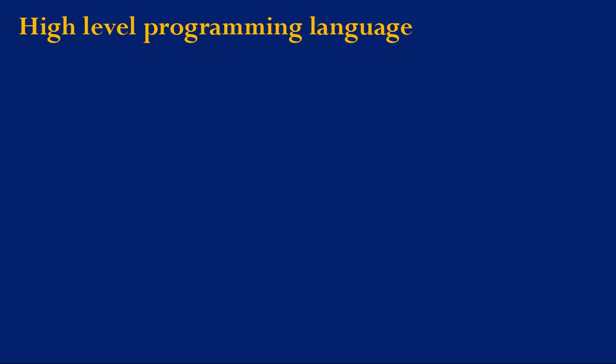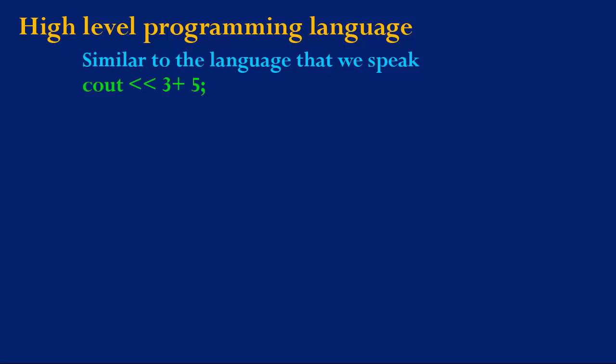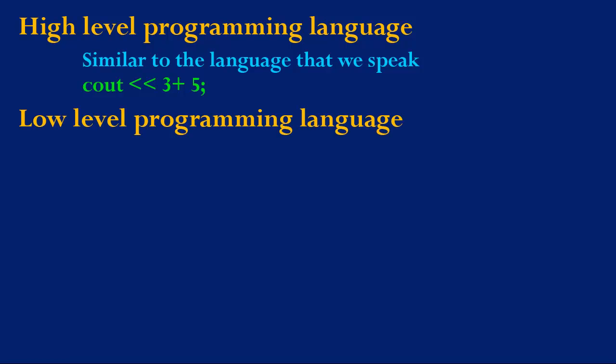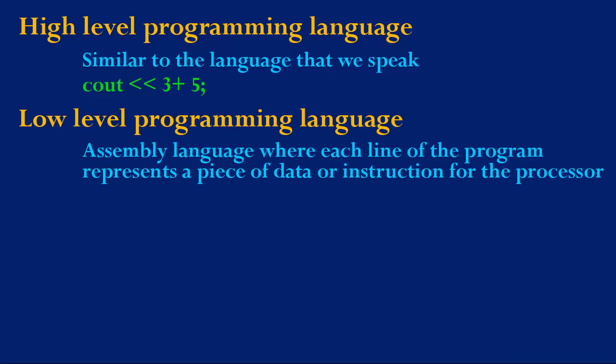Let's first begin by considering what a high-level programming language is. A high-level programming language is a language that is similar to the language that we speak — for example, cout 3 plus 5. A low-level programming language is an assembly language where each line of the program represents a piece of data or instruction for the processor — for example, load 3, add 5, and then output.